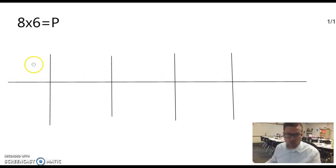I'm going to start it out by saying what is one group of 6? One group of 6 is going to be 6. So one group of 6 is 6. This is the beginning of my ratio table.